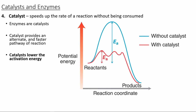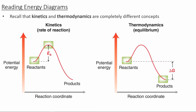Catalysts are not consumed, so we can use them over and over again — we don't need a stoichiometric amount of them. They'll provide a faster alternative pathway for the reaction to occur. If we wanted to summarize in one figure the difference between kinetics and thermodynamics: potential energy is the variable we want to use for all reaction coordinate diagrams, because it allows us to relate both kinetics and thermodynamics. Kinetics looks at the activation energy required for reactants to overcome the barrier, whereas thermodynamics looks at the change in Gibbs free energy between the reactants and the products.